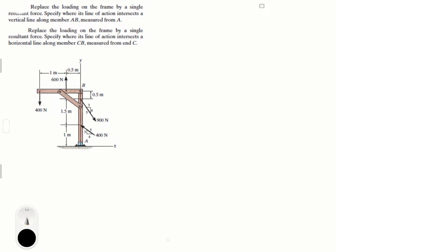Alright guys, we're going to do these two problems that say to replace the loading on the plane by a single resultant force and specify where its line of action intersects a vertical line across member AB measured from point A, which is right here, and the second one is a horizontal line through member CB measured from point C, which is right here.